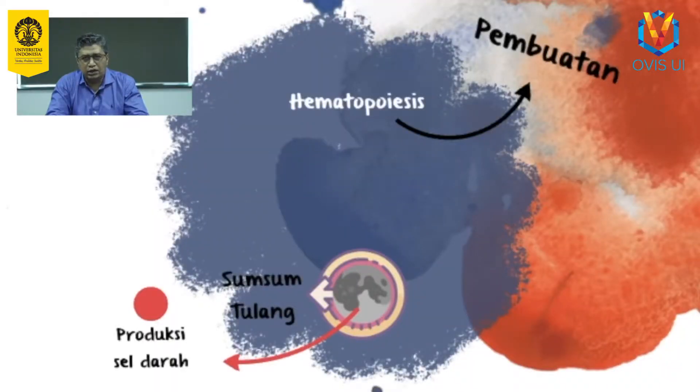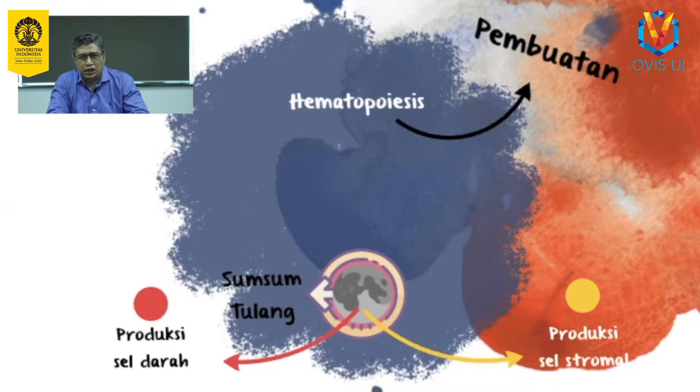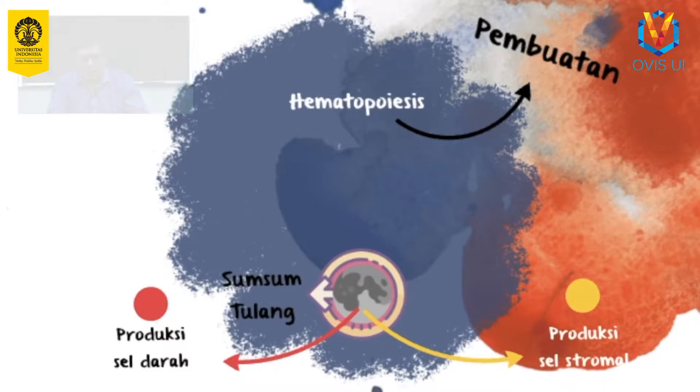Oleh karena itu, sumsum tulang terbagi menjadi 2 jenis berdasarkan tampakan warna sumsum. Yaitu merah jika mayoritas terdiri dari sel punca yang berperan dalam produksi sel darah merah, dan kuning jika yang dominan adalah sel punca stroma. Kedua jenis sumsum tulang ini memiliki vaskularisasi yang tinggi dengan banyaknya hubungan dengan pembuluh-pembuluh darah serta pembuluh kapiler. Darah merupakan bagian dari tubuh manusia yang memiliki peran penting terutama dalam hal distribusi nutrisi melalui sistem sirkulasi.